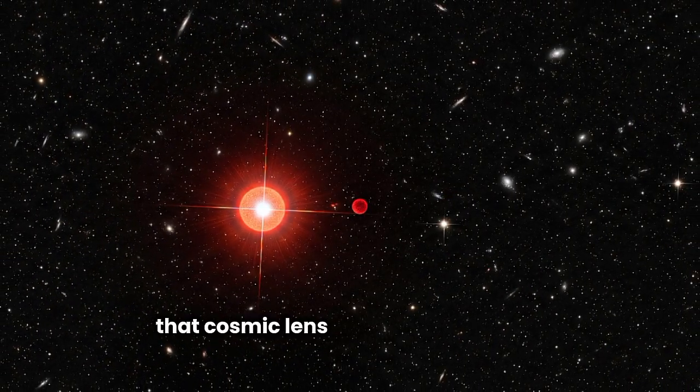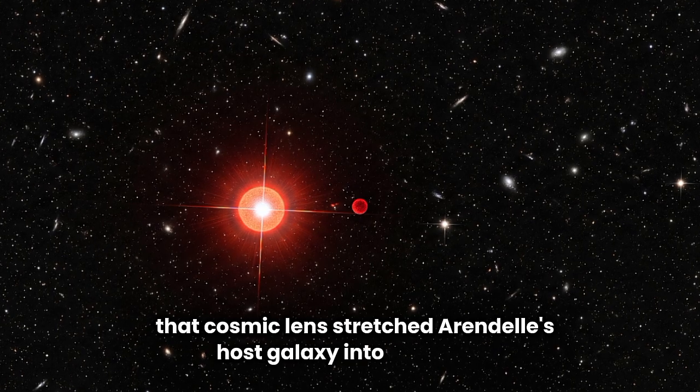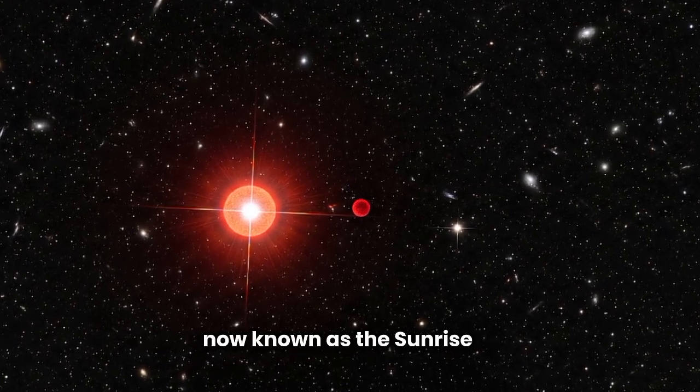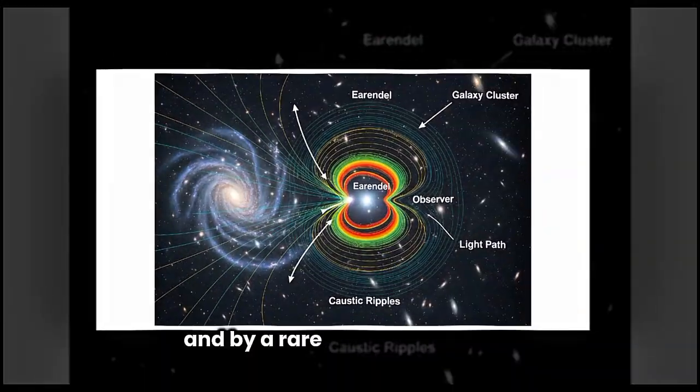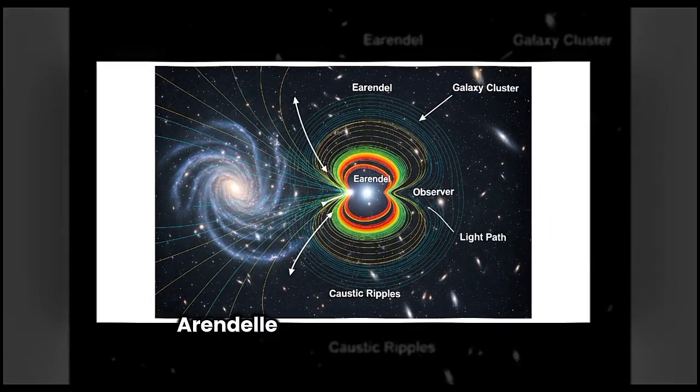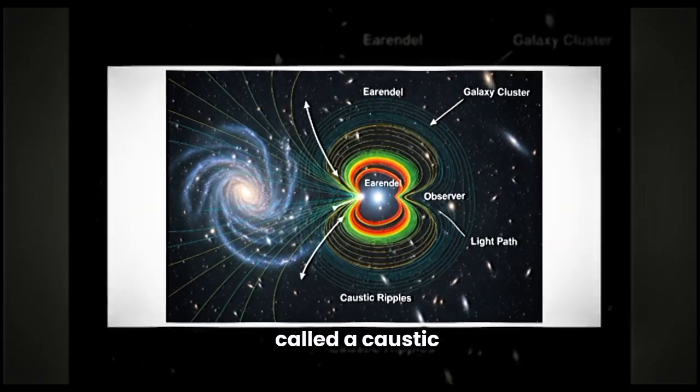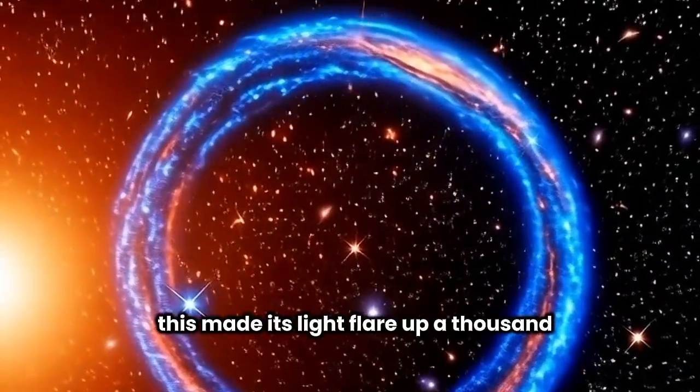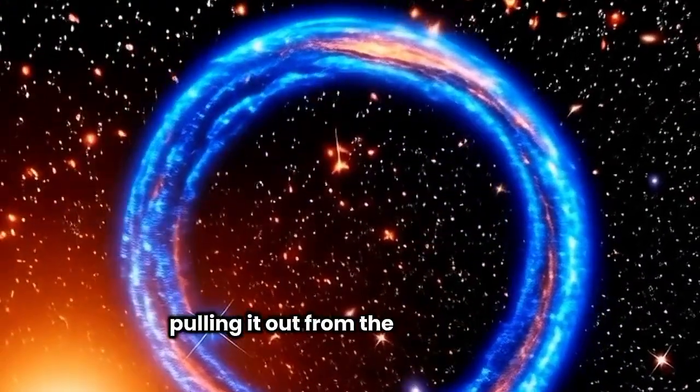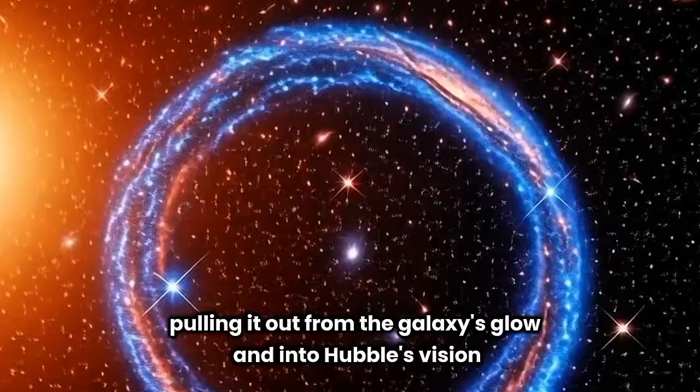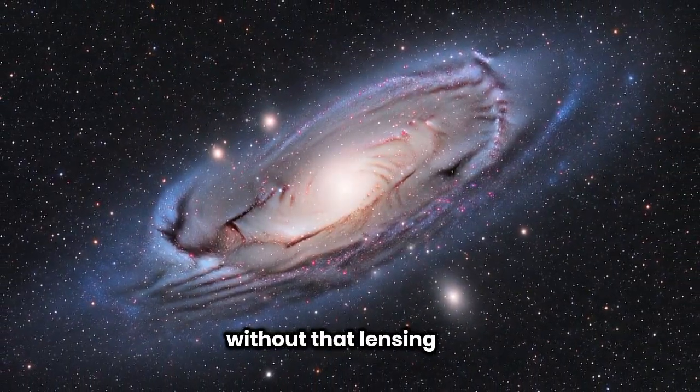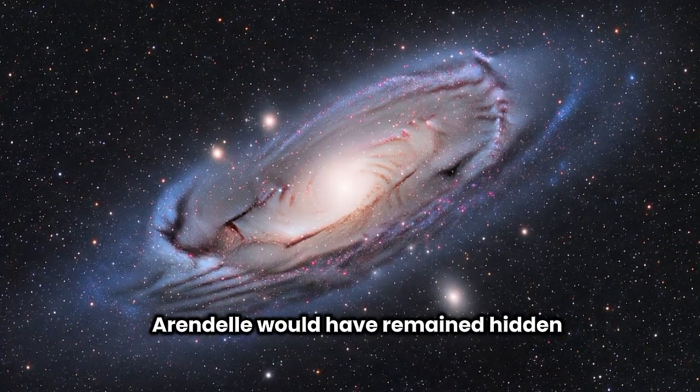That cosmic lens stretched Earendel's host galaxy into a crescent, now known as the Sunrise Arc. And by a rare stroke of alignment, Earendel itself fell along a precise ripple in space-time called a caustic. This made its light flare up a thousand-fold, pulling it out from the galaxy's glow and into Hubble's vision. Without that lensing trick, Earendel would have remained hidden forever.